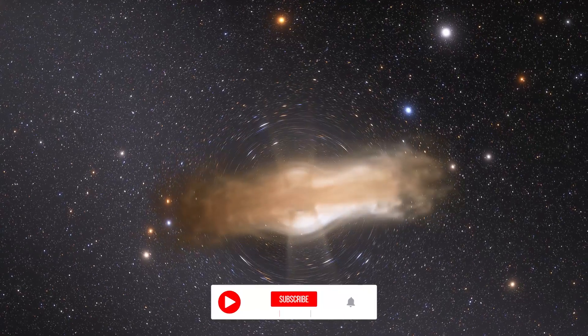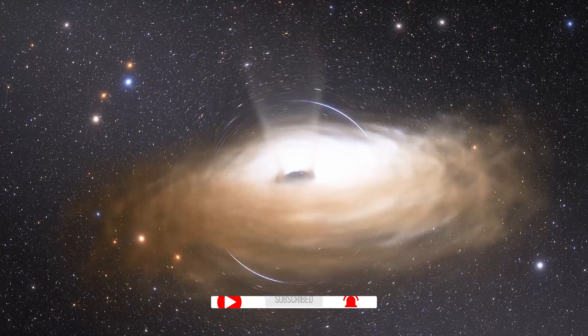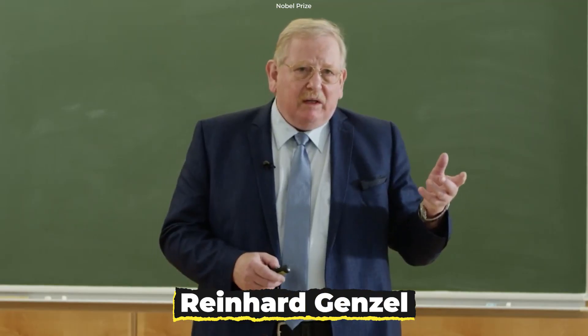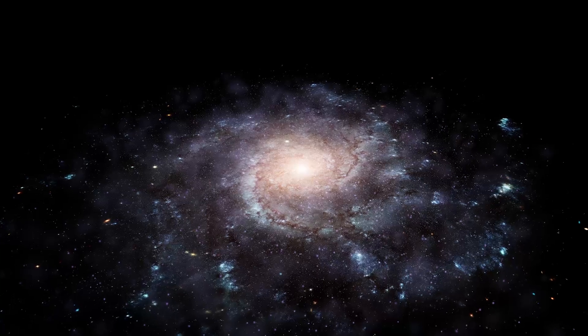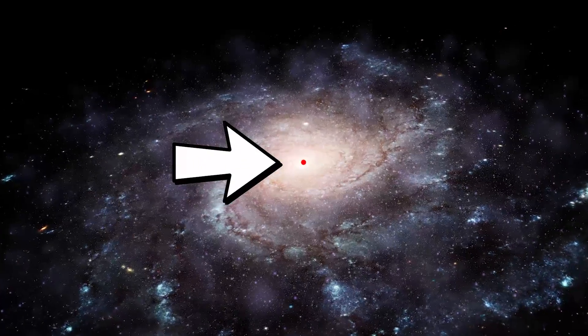Half of the 2020 Nobel Prize in Physics was awarded to Roger Penrose for his mathematical work showing that black holes are an inescapable consequence of Einstein's theory of gravity. Andrea Goetz and Reinhard Genzel shared the other half for showing that a massive black hole sits at the center of our galaxy.